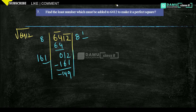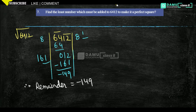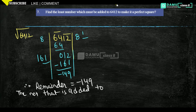So the remainder is minus 149. If we want the remainder to be 0, we need to add plus 149. The number that must be added to 6412 is 149.